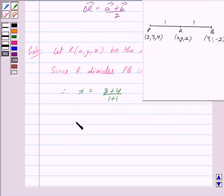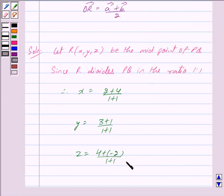Y equals (3 + 1)/(1 + 1) and z equals (4 + (-2))/(1 + 1), and this is by section formula.